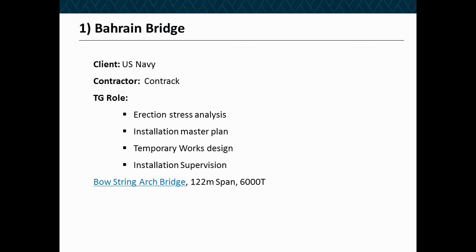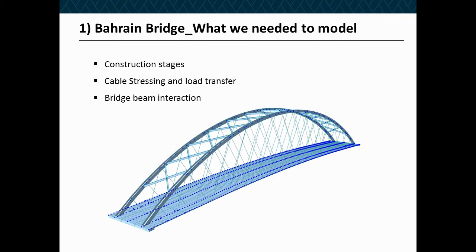Starting with the Bahrain bridge: it's a steel bowstring arch bridge, but the quirky part is that the deck is actually concrete — a post-tensioned concrete deck, tensioned transversely and longitudinally, with a steel girder for the arches and tension hangers for the cables. This is our relatively basic view of the model. Constructing this model was not all that complicated, and you'd be thinking you could build that in pretty much any software — and the designers of the bridge did.